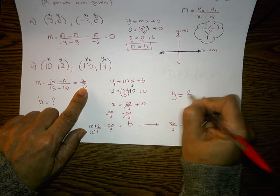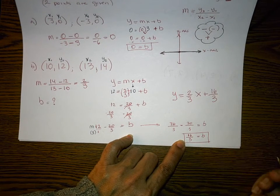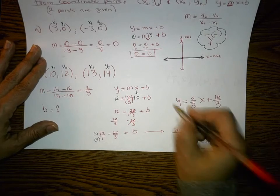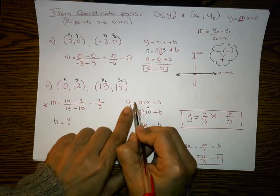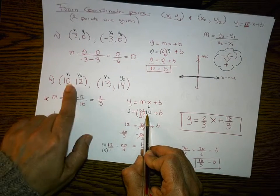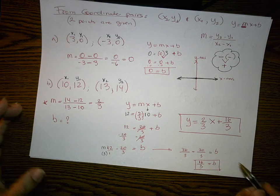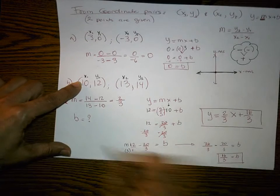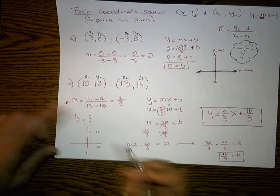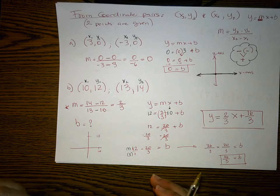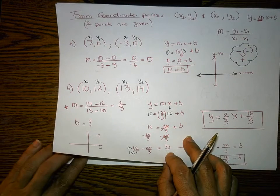Now I can write the equation: y equals two-thirds x plus 16 over 3. Both of these problems were very difficult, but the steps are always the same — find the slope with the slope formula first, then write the equation and plug in one given point to solve for b. Some students prefer to create a graph, plot the point, and use the slope to count back to the y-intercept — that's fine too.